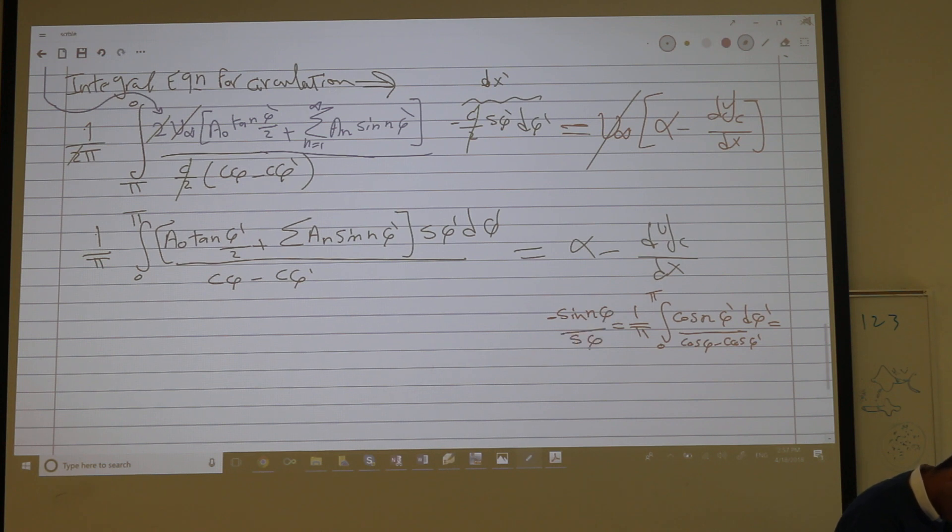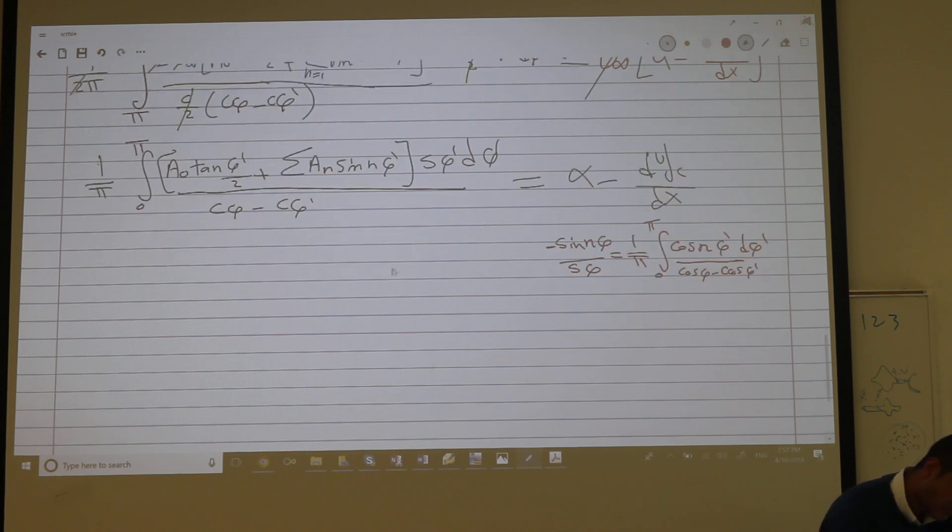This is simply negative sine n phi divided by sine phi, because sine a sine b is one half cosine difference minus cosine addition. You can write this as 1 over pi sine n phi sine phi over the same denominator as actually cosine n phi only.